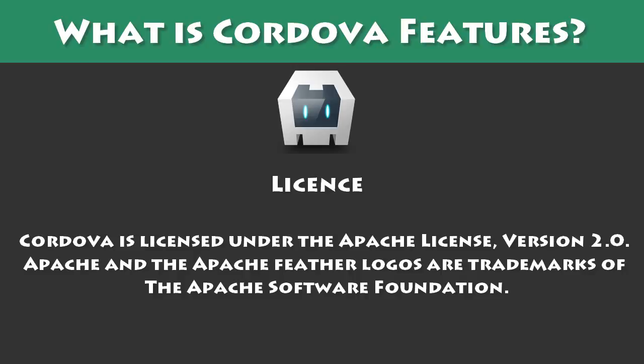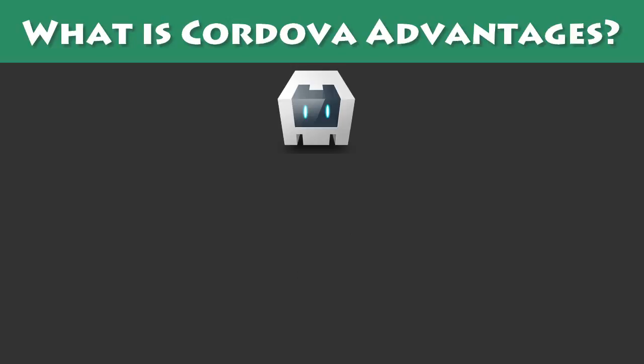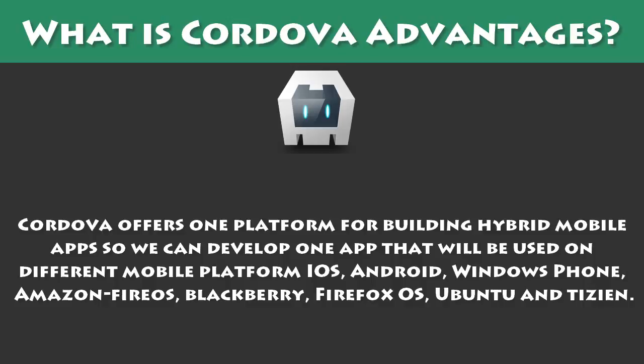Apache and the Apache Feather logos are trademarks of the Apache Software Foundation. What are Cordova's Advantages? Cordova offers one platform for building hybrid mobile apps so we can develop one app that will be used on different mobile platforms: Android, Windows Phone, Amazon FireOS, BlackBerry, Firefox OS, Ubuntu and Tizen.